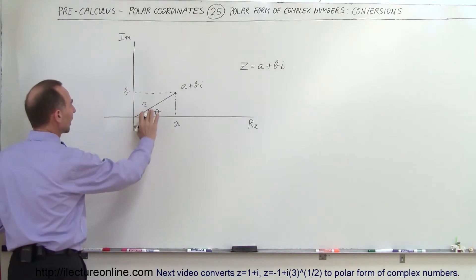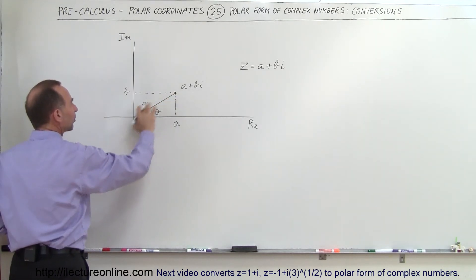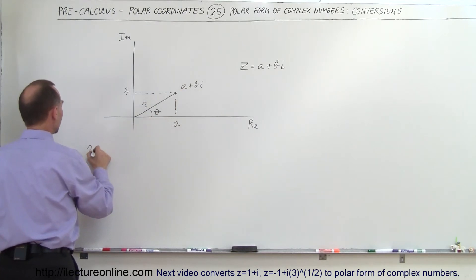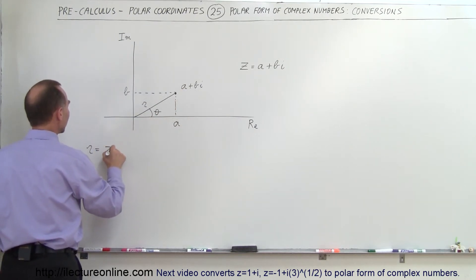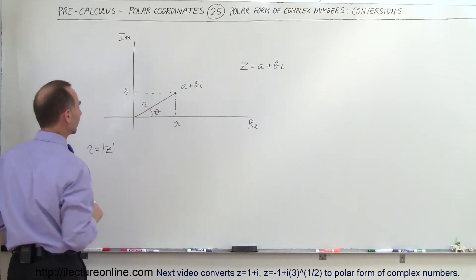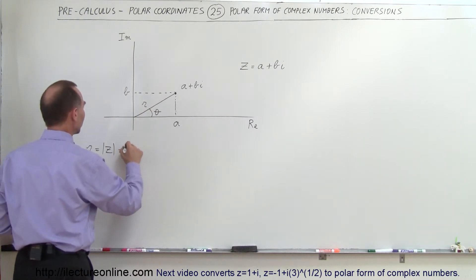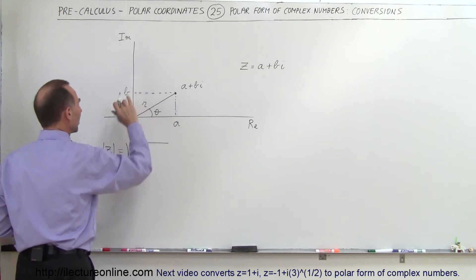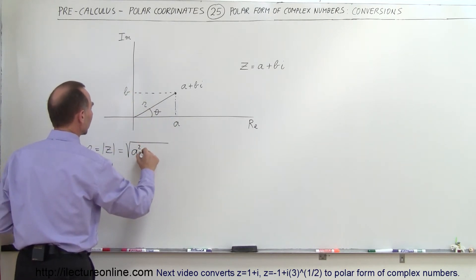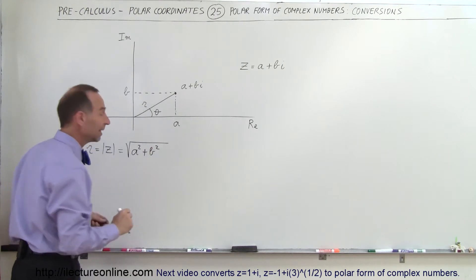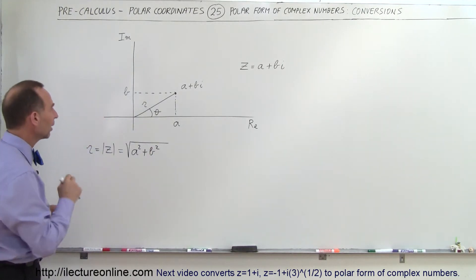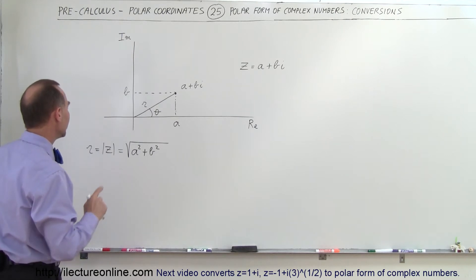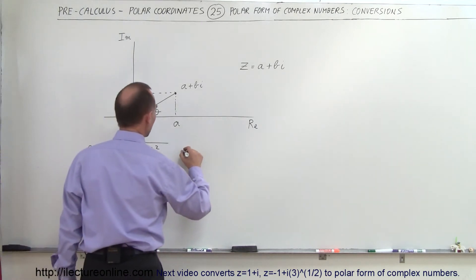First of all, we realize that R is the absolute value of the complex number. So we can say that R is equal to the absolute value of Z, where Z is that complex number, and that would be equal to the square root of the real part squared plus the imaginary part squared — so that would be A squared plus B squared. This is known as the modulus.